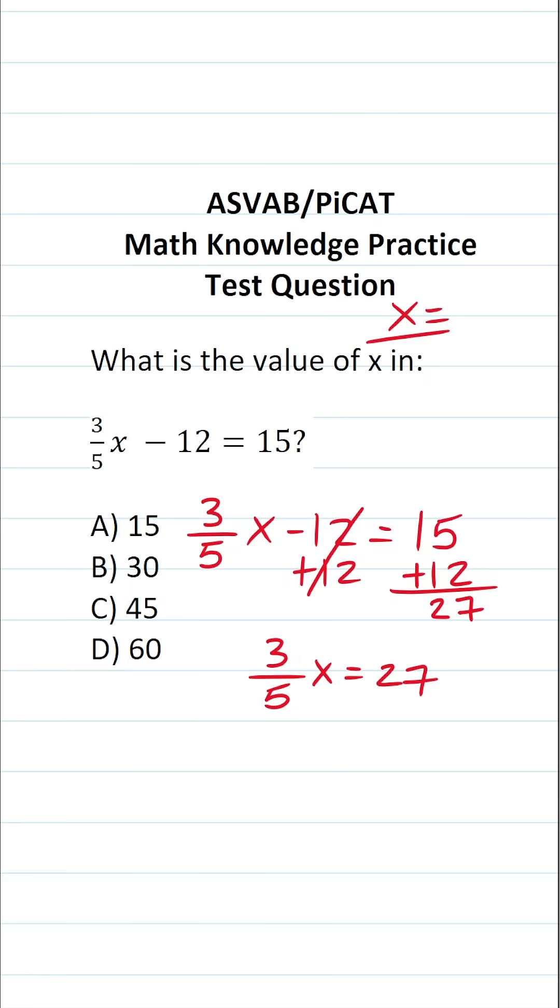Now we have to clear this 3 fifths that's in front of x. To do that, we're going to multiply both sides of this equation by the reciprocal of 3 fifths, which is going to be 5 over 3. In doing so, this crosses out here and here, leaving you with x on this side.